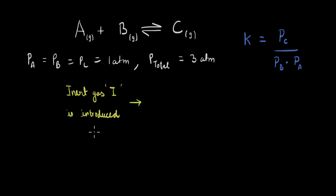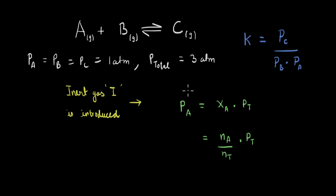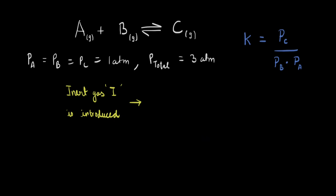Now let's say we introduce an inert gas. Since we're assuming constant pressure conditions, the total pressure is going to be the same, which is 3 atm. But because we're adding one more gas and the total pressure has to be 3 atm, each of these partial pressures will have to reduce. The partial pressure of A equals the mole fraction of A times the total pressure, and the mole fraction is the number of moles of A divided by the total number of moles. When we add an inert gas, the total number of moles goes up and the number of moles of A don't change, so the mole fraction of A decreases. We assume each partial pressure reduces equally, all becoming 3/4 atm.